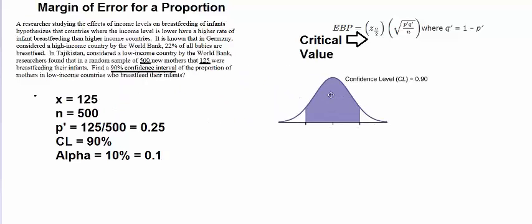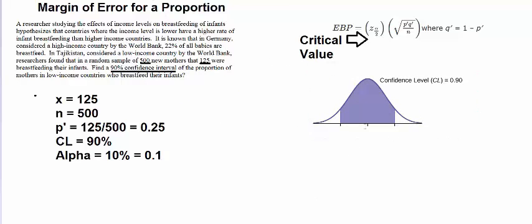If you think about a normal distribution, here we go. A 90% confidence interval, that means we are expecting the parameter to fall within this 90%, the shaded region. That means that 10% will fall outside the center or 5% will fall below and 5% will fall above. We are looking for the Z score that would go here or here.